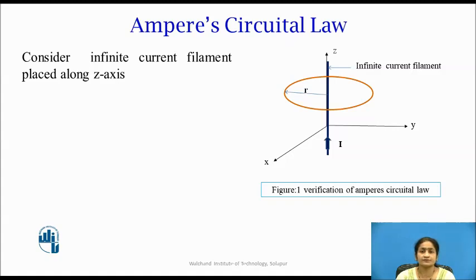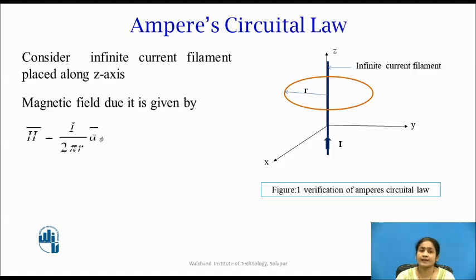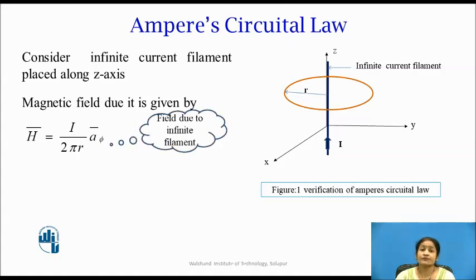To verify this, we state the magnetic field intensity. The magnetic field intensity due to the filament is given by H̄ = i / (2πr) · a_φ, where i is the current flowing through the filament, r is the radius of the circular path, and a_φ is the direction. This derivation was already discussed in previous videos on the magnetic field intensity due to an infinite filament.